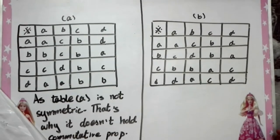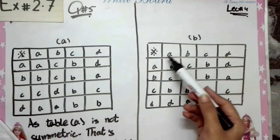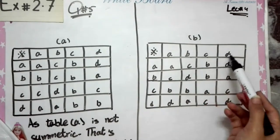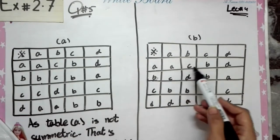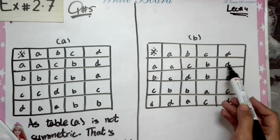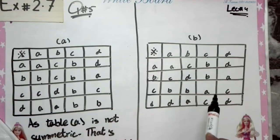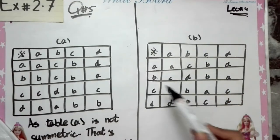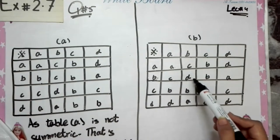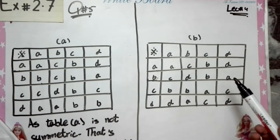Now let's check table B. The rows and columns available are A, B, C, D. Checking row by row against the corresponding columns: first row and first column match. Second row is A, A, C, B, D and the second column is also A, A, C, B, D — they match. Third row is B, C, D, B, A and the third column is also B, C, D, B, A — they match.